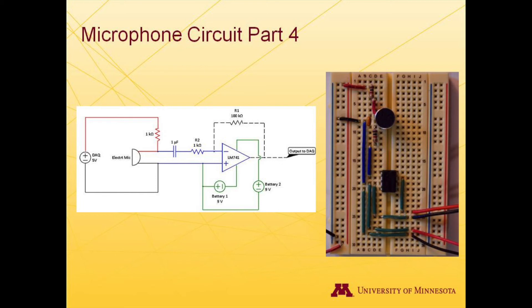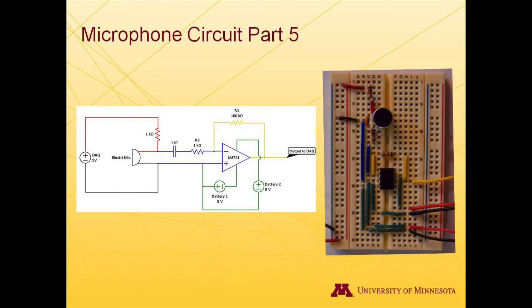Next, we attach battery number 2 to supply positive voltage. Therefore, the positive terminal of the battery is connected to pin 7 on the operational amplifier, and the negative terminal on the battery is connected to pin number 3 of the op-amp, and therefore the ground of the DAC. Finally, we connect the 100 kOhm resistor R1 between pin number 2 and pin number 6 on the op-amp, and we will read out the output voltage using the yellow wire shown on the right side of the breadboard. This yellow wire is attached to one of the analog inputs on the DAC. Because the entire circuit is powered via the 5 volt source on the DAC and grounded to the ground of the DAC, we can take this measurement using the RSE, or reference single-ended, mode in the DAC assistant.